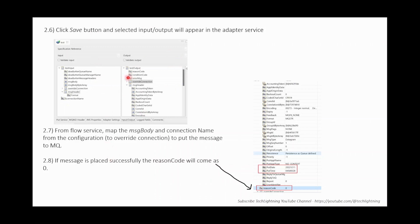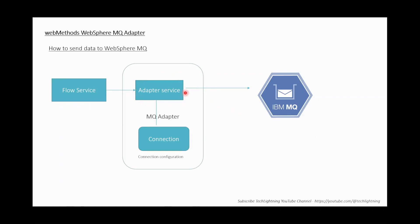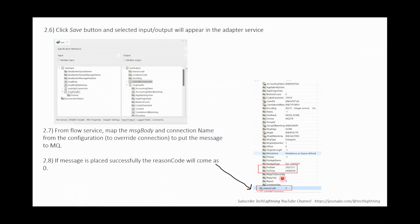We created a connection, then an adapter service. Now we create a flow service to map the message body. You can also override the connection name to use a different connection for different environments by pulling it from config. Once the message is placed successfully, the reason code returns zero. The adapter service uses a Put template and the connection to drop the message. The output also shows the put date and time — for example, 11th December 2022. This is how you send a message to IBM MQ.